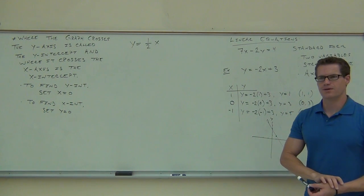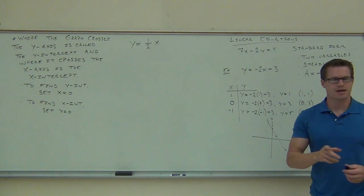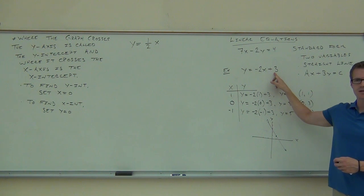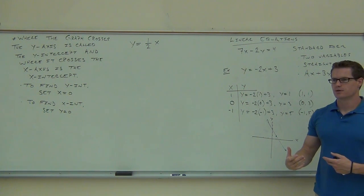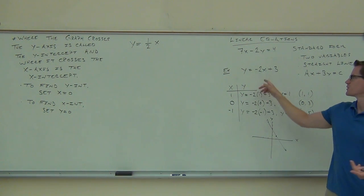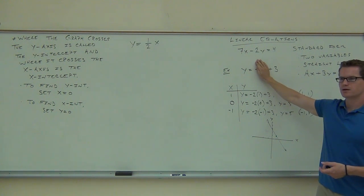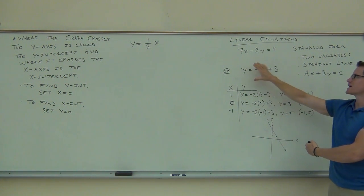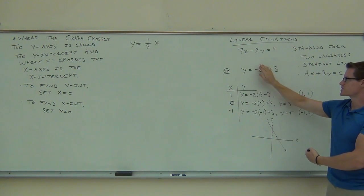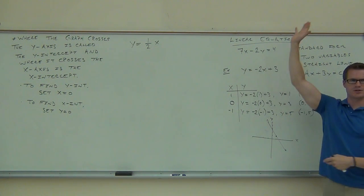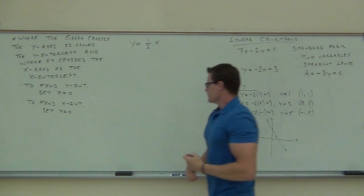Notice where we crossed the y-intercept was at 3, and we also have a positive 3 at the end of our equation. That's not a coincidence. In slope-intercept form, the constant at the very end always gives you the y-intercept. If you plug in 0 for X, the X term disappears and y equals that constant. This works in slope-intercept form, but not in standard form.